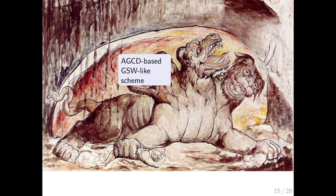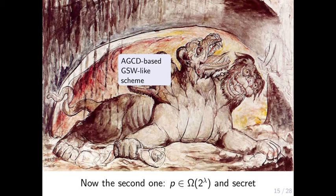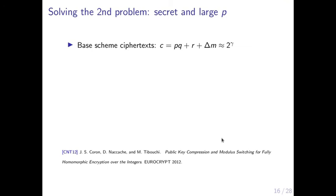With this, we solved the first problem — we now have a GSW-like scheme that operates homomorphically on polynomials. Now we address the problem related to the size and secrecy of p. We have the base scheme ciphertext and the problem is p: it's secret and too large.